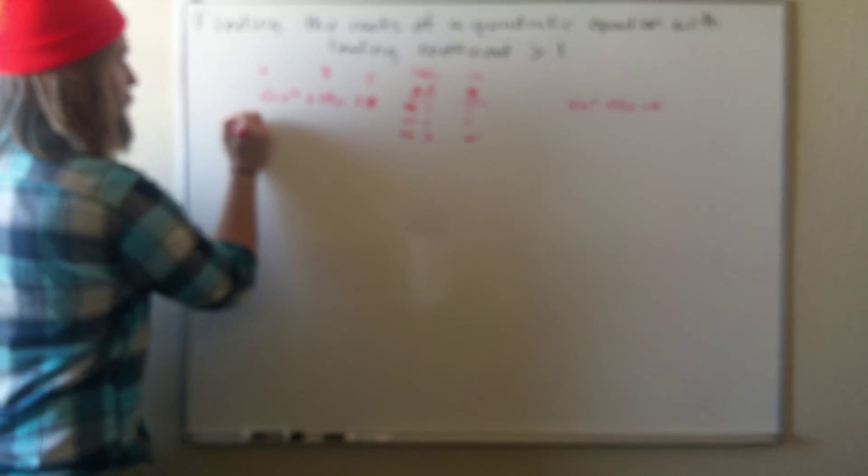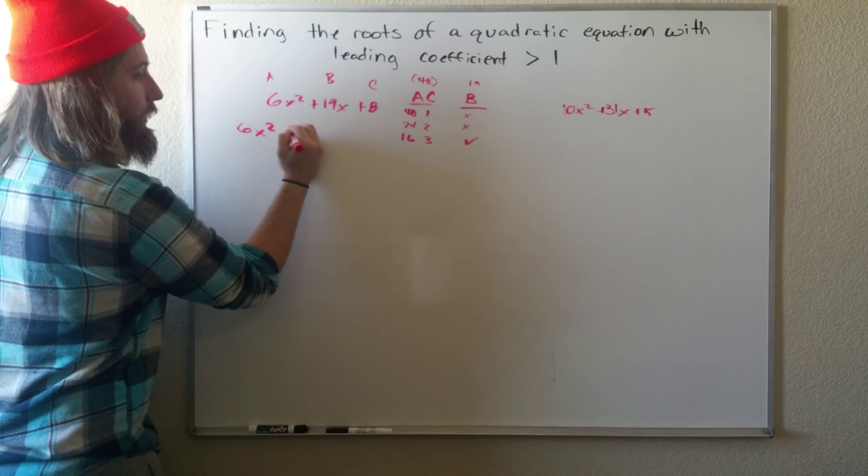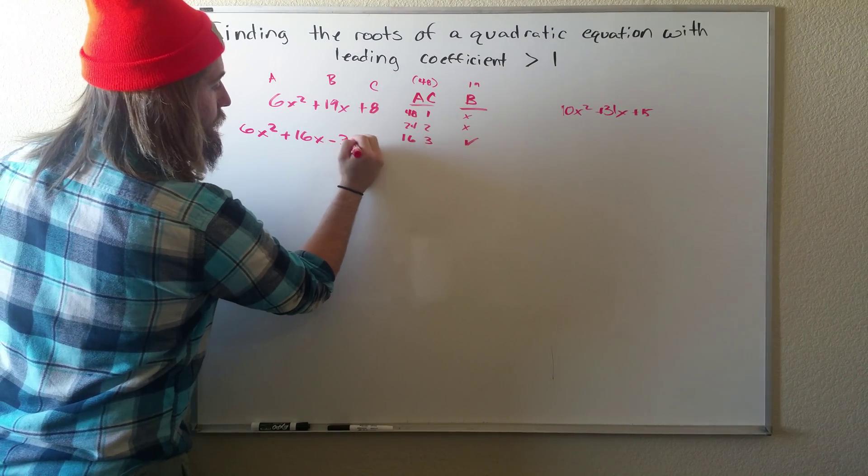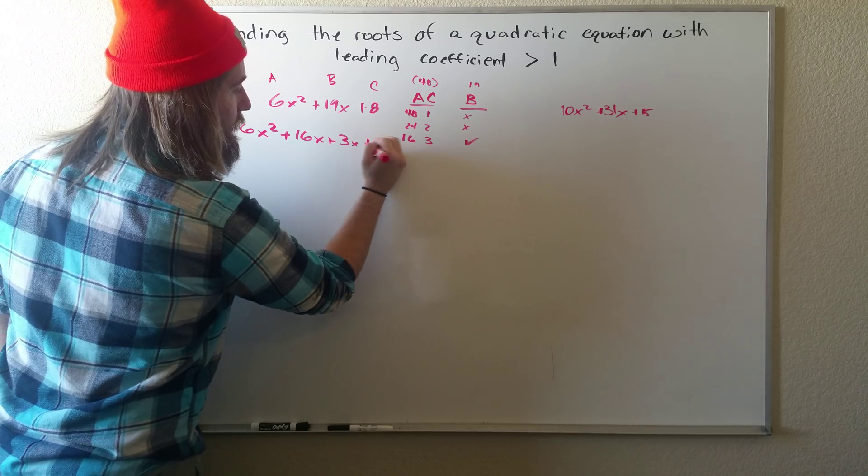So now we can break up this middle term. So we have 6X squared plus 16X plus 3X plus 8.